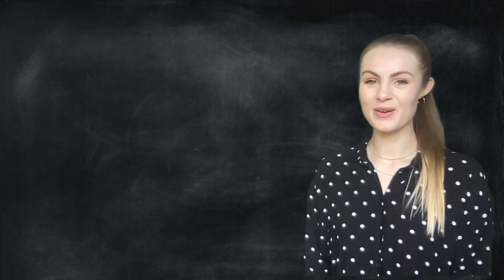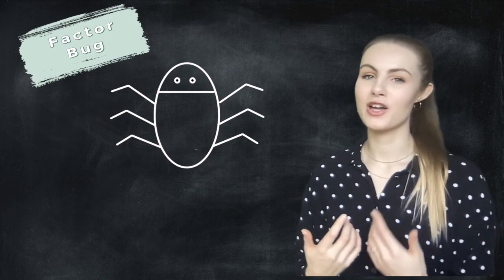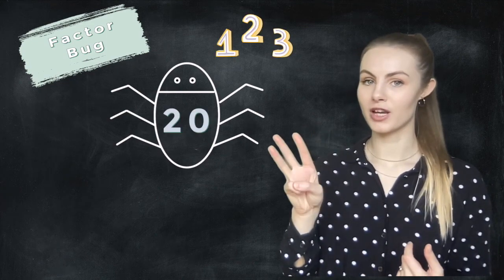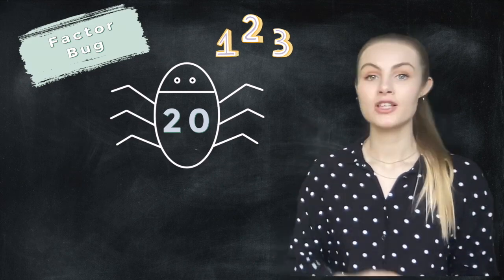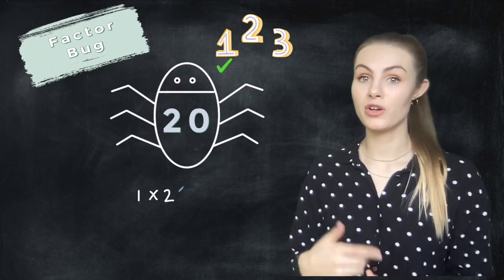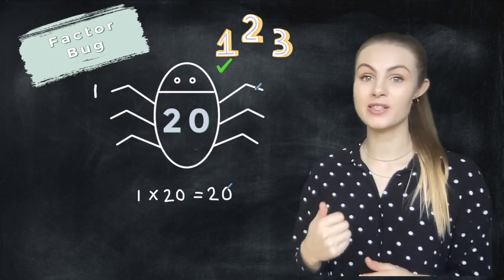Say hello to the factor bug. Here's our easy method. Let's say that we want to find all the factors of 20. 1, 2, 3. We're going to start with 1. So every single number is always divisible by 1 and itself. So in this case 1 and 20. So let's put them on our factor bug and we're going to put them right at the top because they're our first ones.